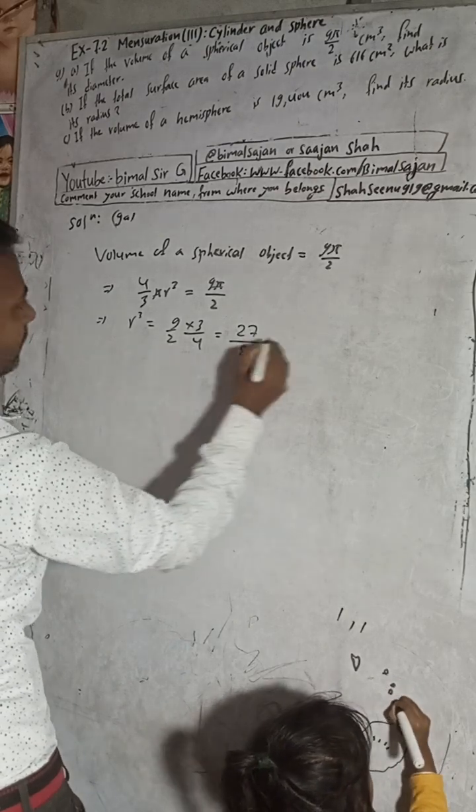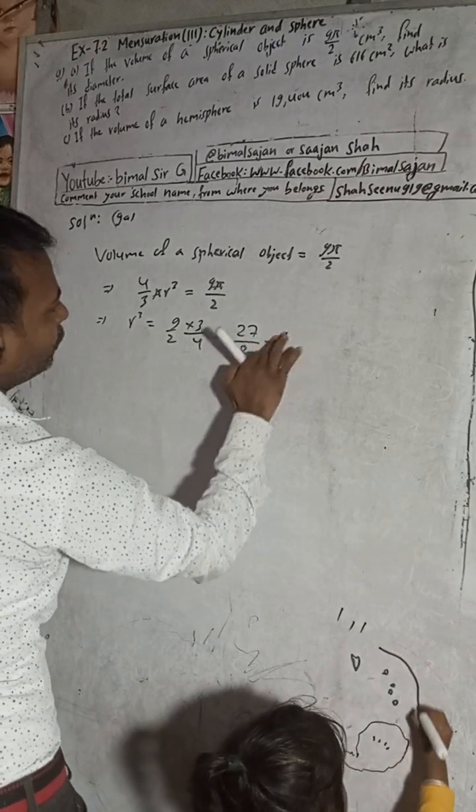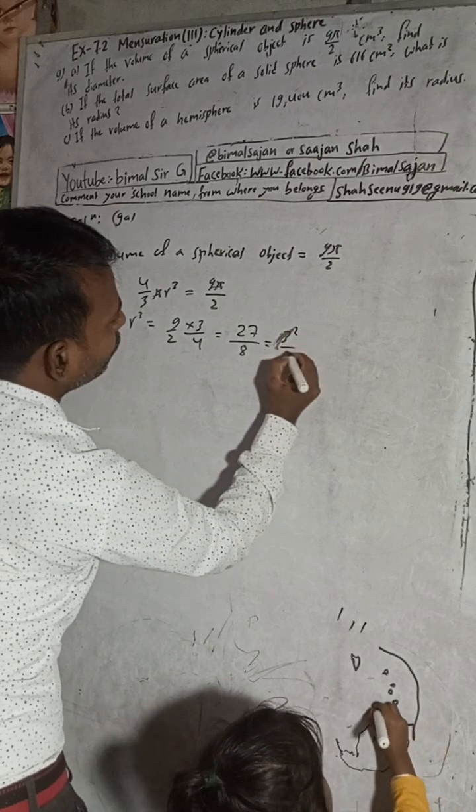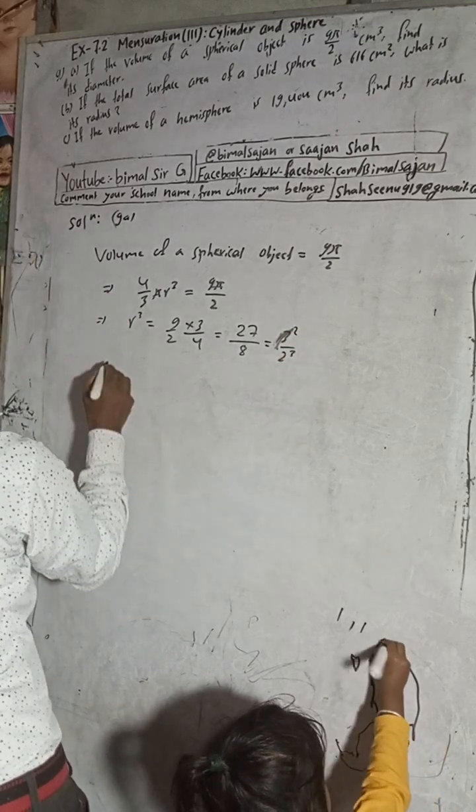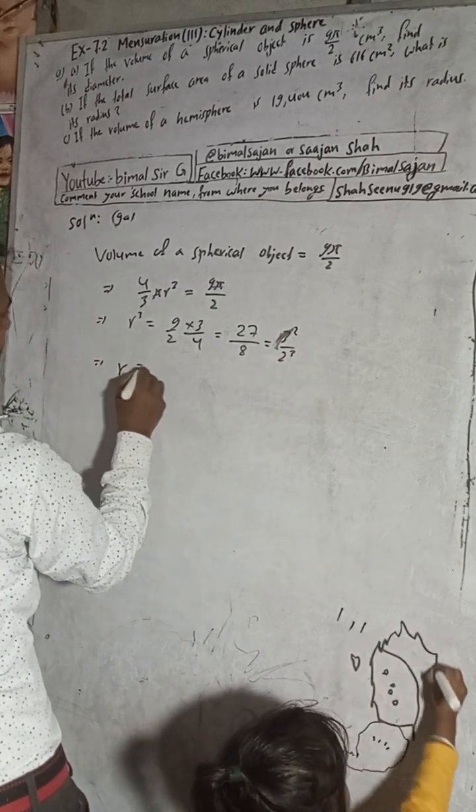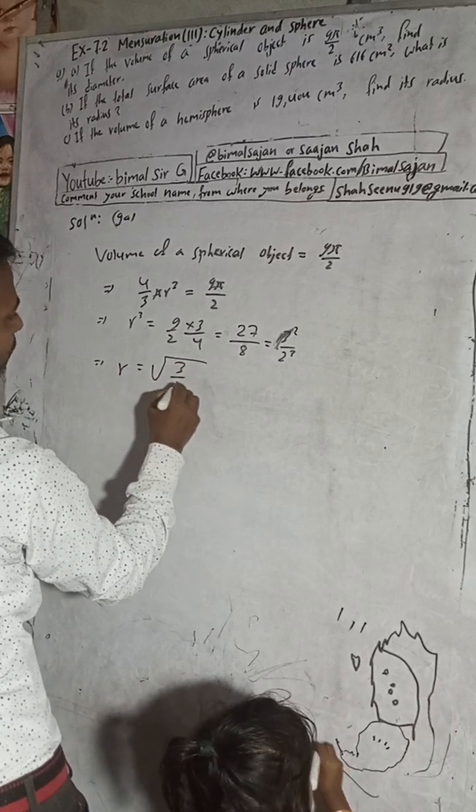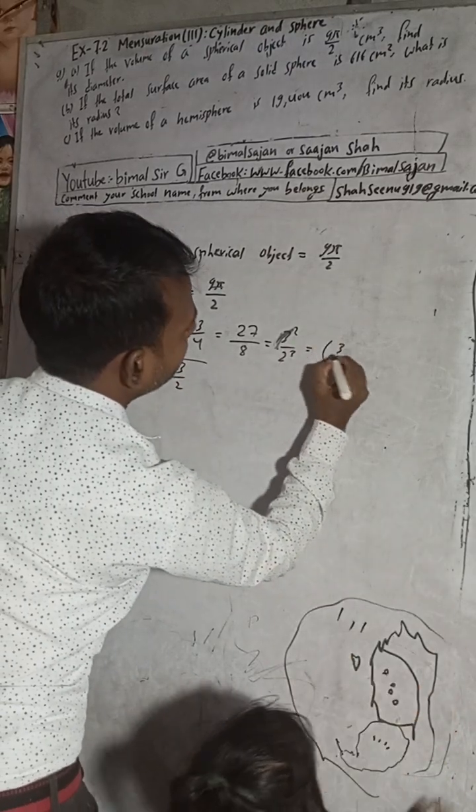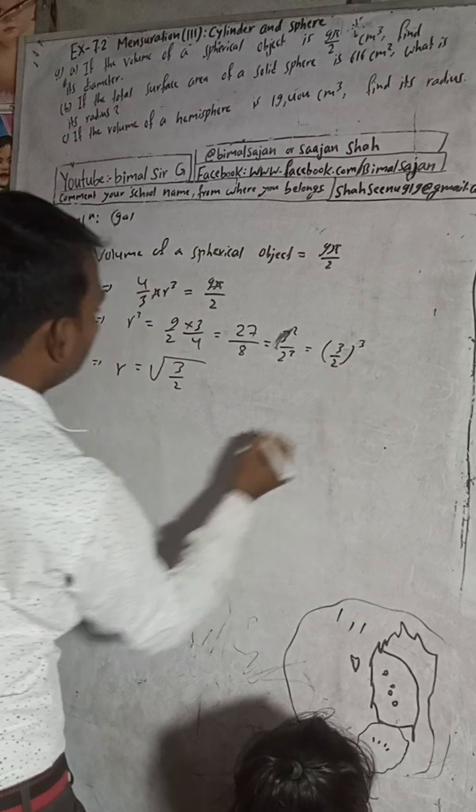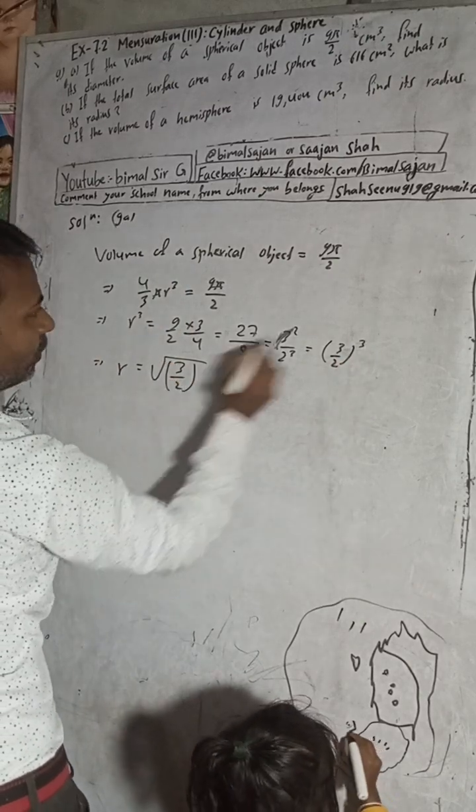This is nothing but 3³ and 2³, 3³/2³. So r is equal to cube root of 3³/2³, this is equal to 3/2 and then whole cube.